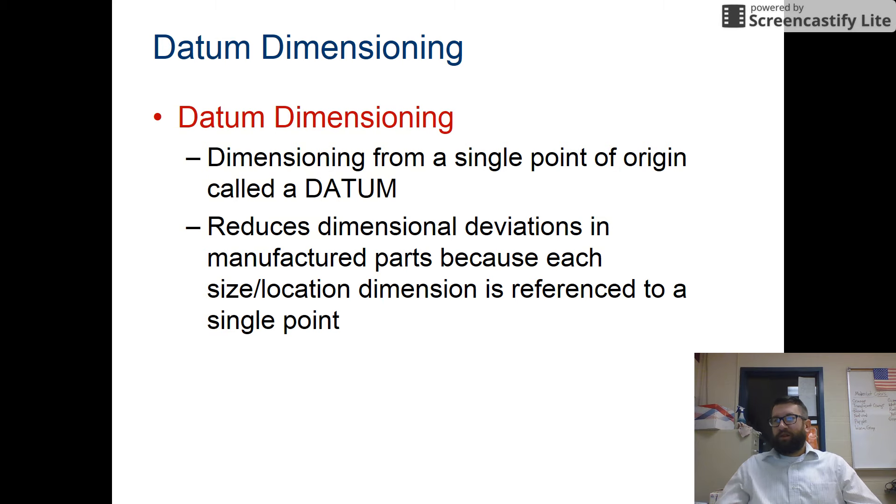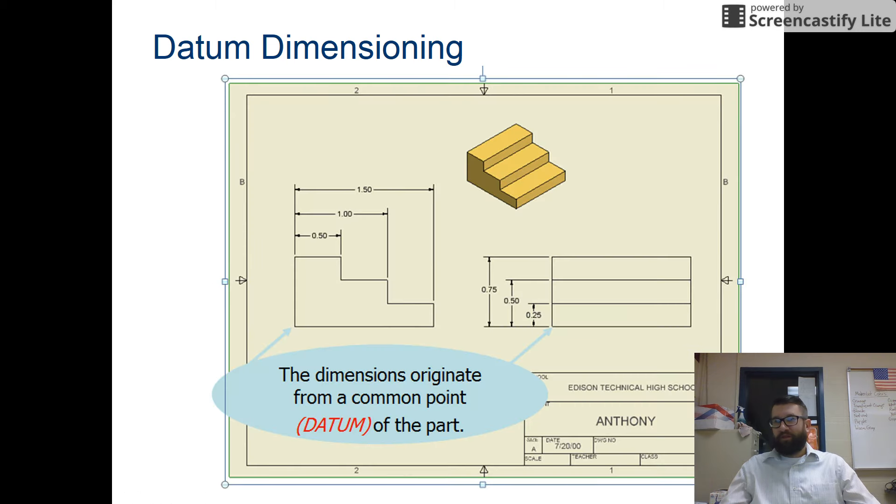Datum dimensioning. Dimensioning from a single point of origin called a datum. This reduces deviations, because each size and location is referenced to a single point. So this is what we're most familiar with that we've done in the past. So here, notice that all of the dimensions start from the left side, and then here all of the dimensions start from the bottom. So you have 0.5, and 1, and then 1.5. Here we have 0.25, 0.5, and then 0.75. So it's like they go up all from a single origin, or the datum of the part.